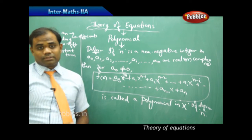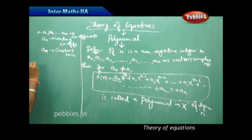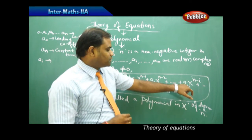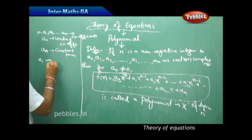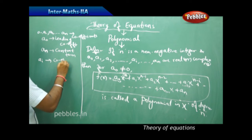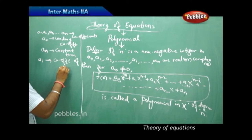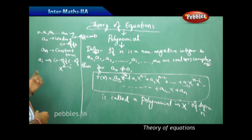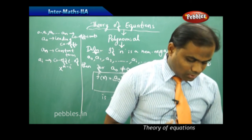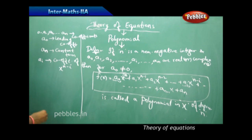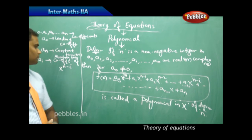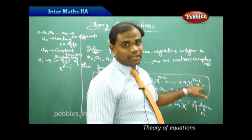aₙ is the constant term, also called the absolute term. The general coefficient aᵢ is the coefficient of xⁿ⁻ⁱ. So: a₀ is the leading coefficient, aₙ is the constant (absolute) term, and aᵢ is the general coefficient of xⁿ⁻ⁱ. This makes a complete picture of what a polynomial is.